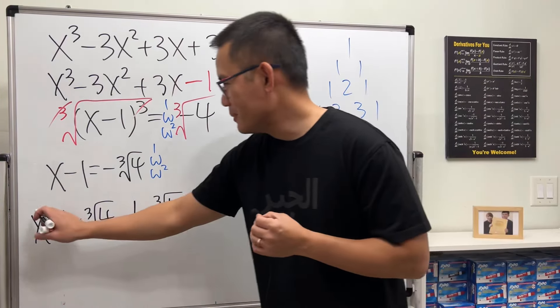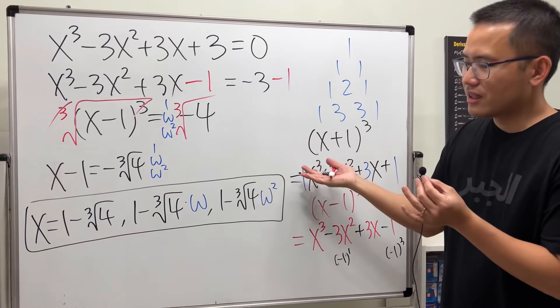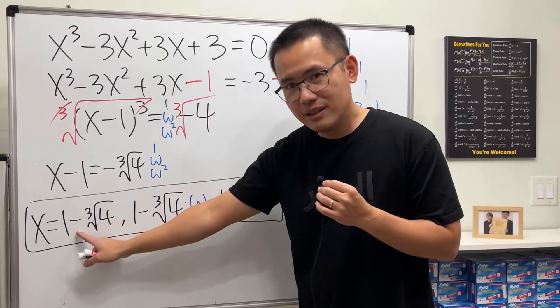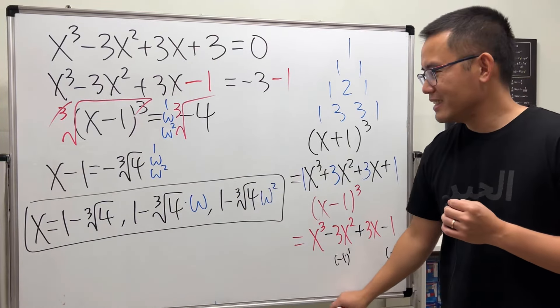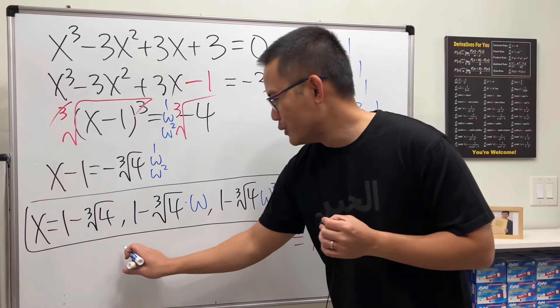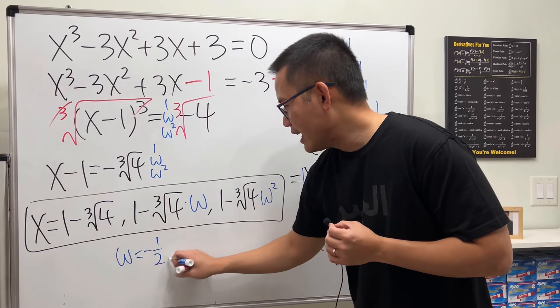And ladies and gentlemen, you can present this for the answer. This is the only real one, these two are the complex ones. What's omega you ask? Well you should have seen my previous video, but don't worry, I got you. Let me write it down for you: ω = -1/2 + (√3/2)i.